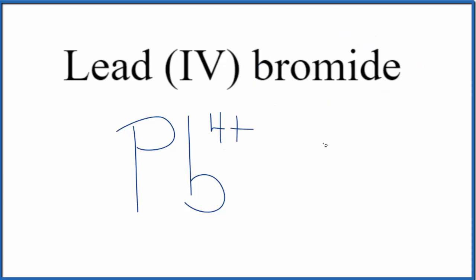Bromide, that's from bromine, so we just write Br. Since lead is a transition metal and bromine is a non-metal, we're going to need to consider the charge. We're going to need to make sure the charge is balanced.